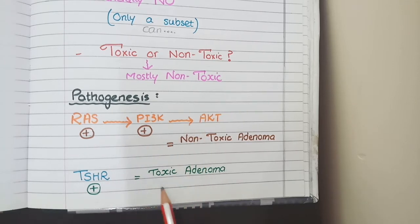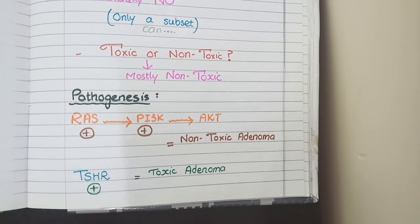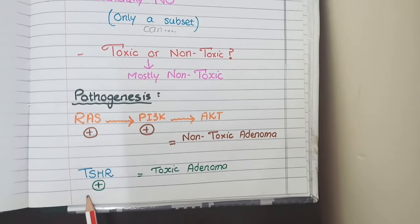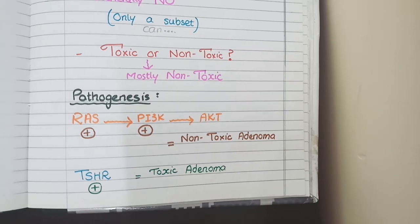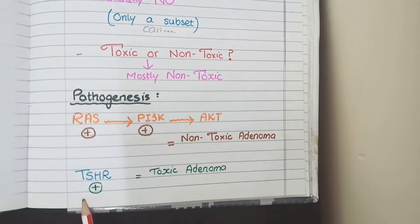In cases of toxic adenomas, the mutations lie at the level of the TSHR — thyroid stimulating hormone receptor — present on thyroid follicular cells. When this receptor is over-activated due to mutation, TSH has excessive effects on follicles, resulting in increased follicle size and increased thyroxine production.